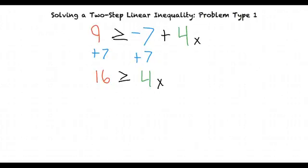Next, since there is still a positive 4 attached to the x, we need to divide both sides by 4, which then gets us the result of 4 greater than or equal to x.